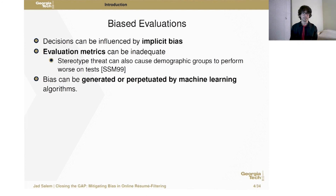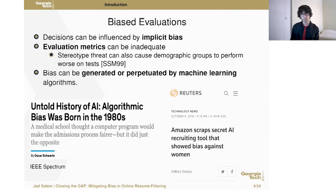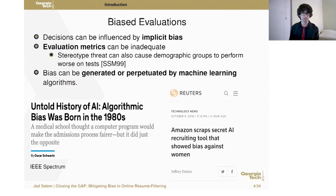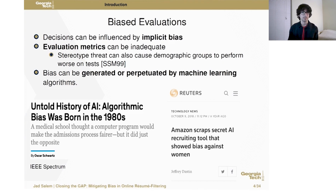Another way that bias can enter this system is through machine learning itself. Machine learning typically uses historic data as training data and builds models based on it. The historic data is just a reflection of our society — if there is societal inequality, it is likely to be present in the training data and therefore likely to be perpetuated by the machine learning algorithm.